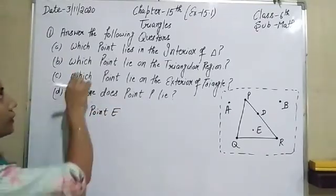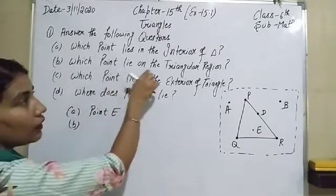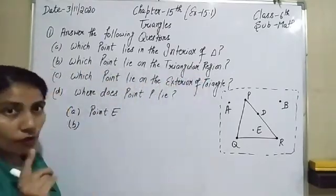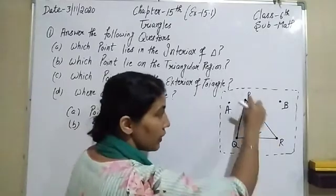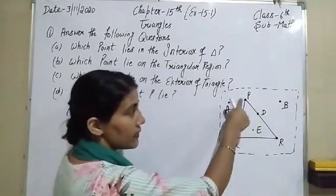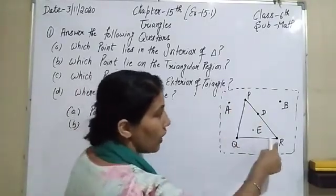Now in part B, which point lies? Here is a triangle. How many points lie? Here are points P, Q, R, D, and E.